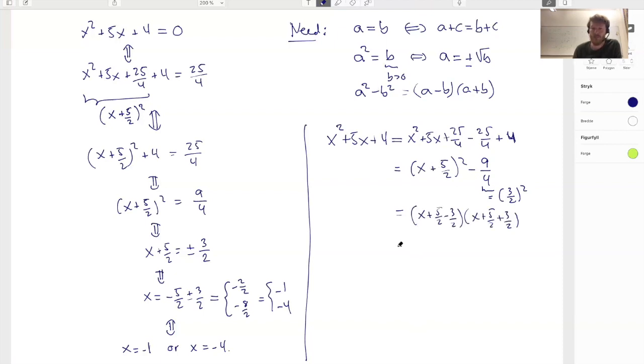So I get this minus 3 halves times this plus 3 halves. I'm using this formula. So this is x plus 2 halves times x plus 8 halves, giving me x plus 1 times x plus 4. Now I factorized it using basically the same technology, mathematical technologies here.